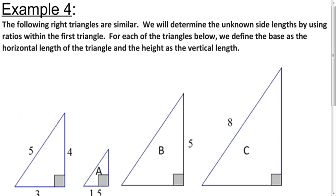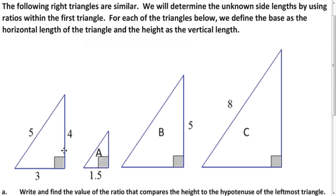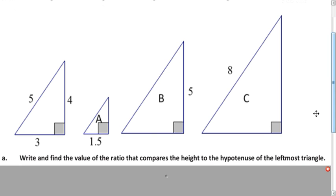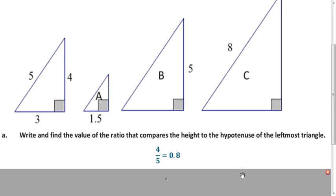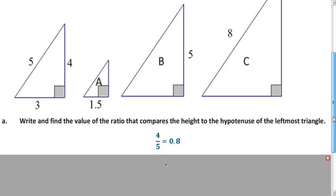In this example, we have four similar triangles, and they're all right triangles, so we know that the long side of each is the hypotenuse. The horizontal length is the base, and the vertical length is the height. We want to write some within-figure ratios. First, what ratio compares the height to the hypotenuse of the first triangle? Height to hypotenuse would be 4 divided by 5, which is 0.8.